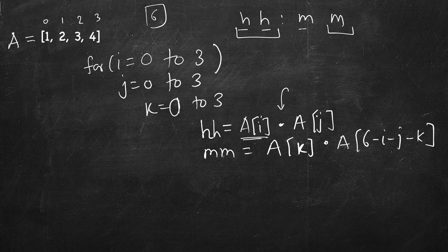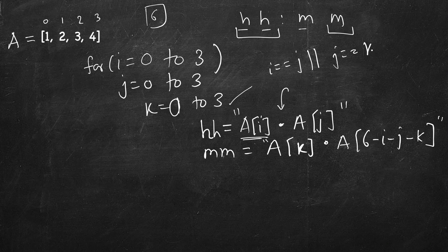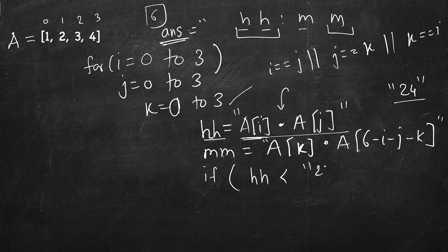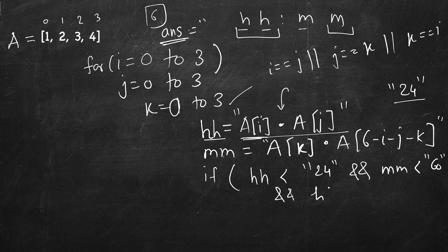We concatenate into one string and check that i, j, k are all distinct — if i equals j, or j equals k, or k equals i, we skip those values. We maintain a global result variable. We check that HH is less than 24 and MM is less than 60, and if the current HH:MM string is greater than the result, we found a better valid time and update the result.